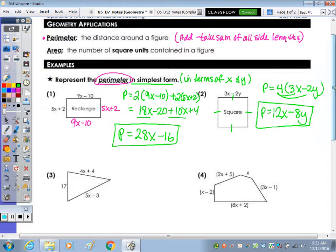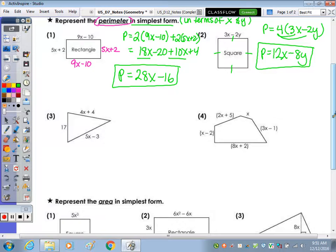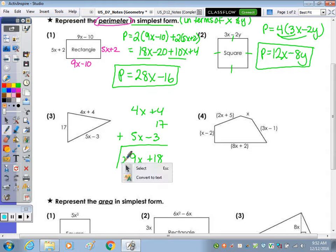Number three, the triangle. Adding all three sides, I will stack them this time. We have 4x plus 4, the 17, and then 5x minus 3. Combining 4x and 5x we have 9x. 4 plus 17 is 21, and 21 minus 3 is 18. So perimeter equals 9x plus 18.